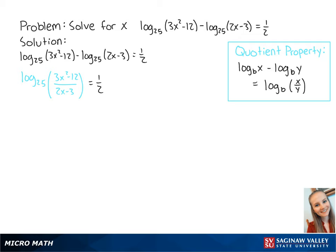To remove the log, we can use this next property. For this equation, b equals 25 and y equals 1 half.